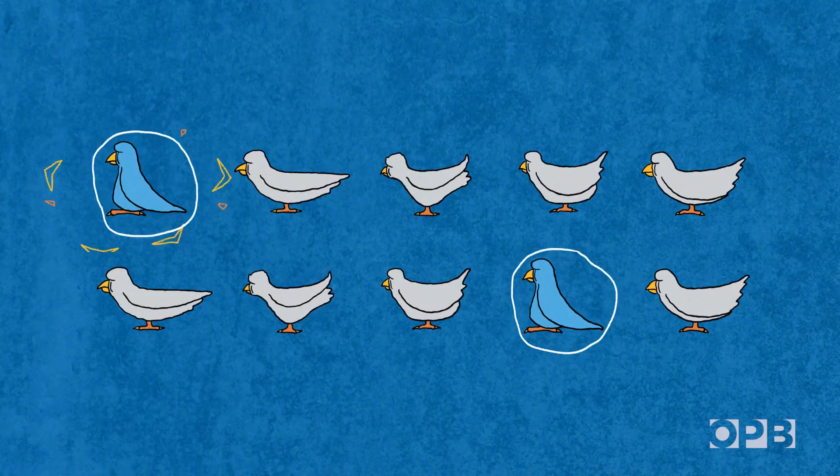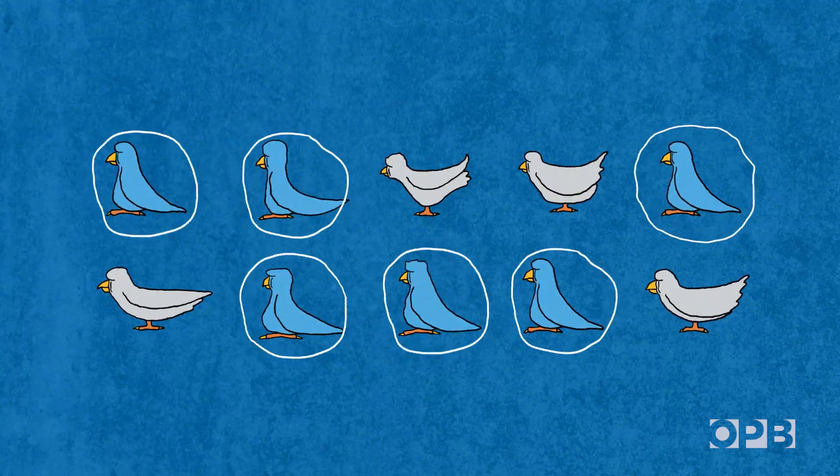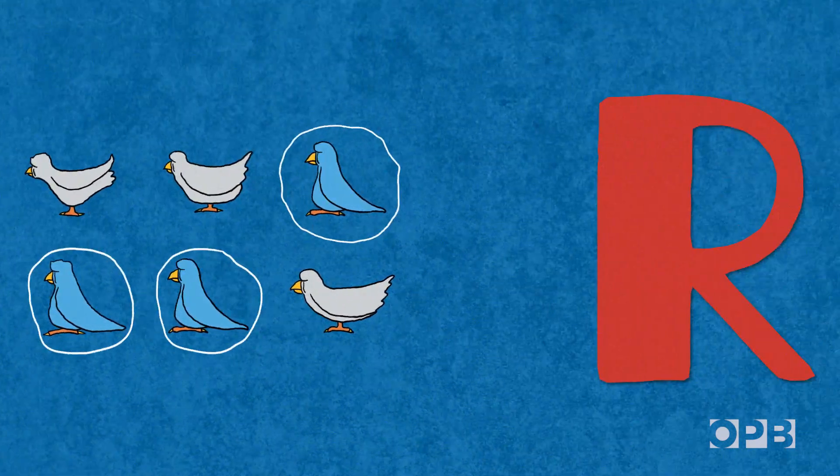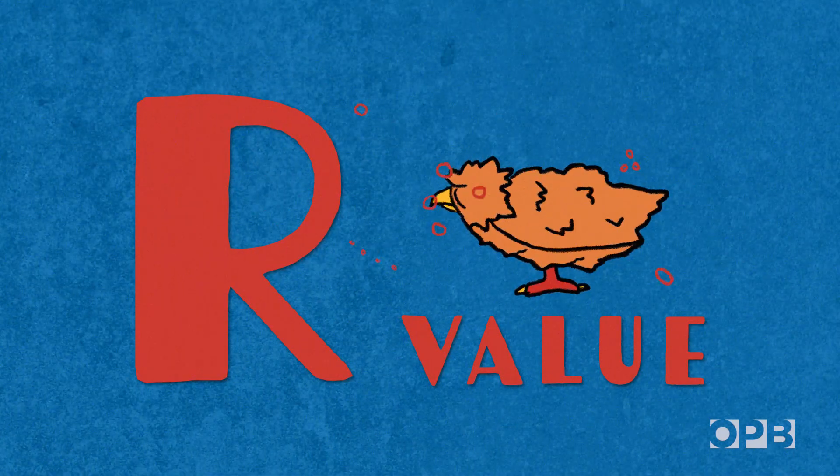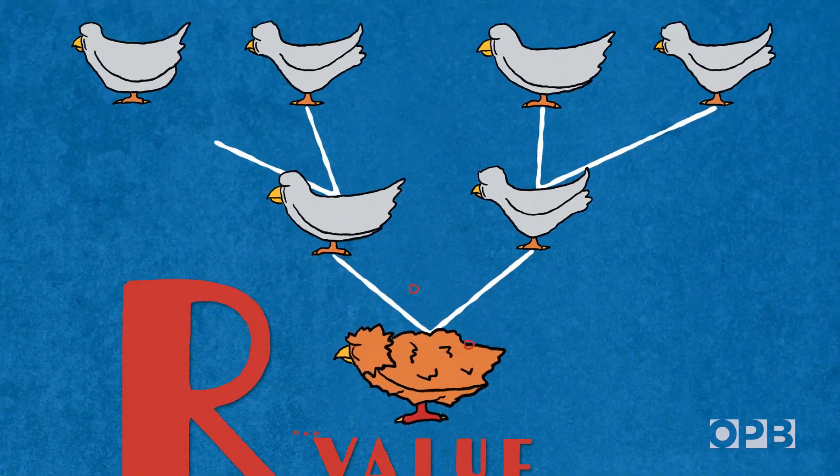Figuring out how many cows, humans, or any other animal need to be immune to protect the whole herd depends on how infectious a disease is. This is the R-value. It refers to how many people each sick person is expected to pass a virus on to.